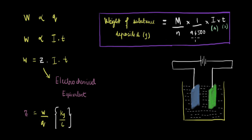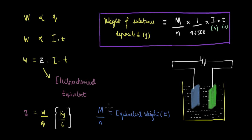If you want to know more about how we got to this expression, you can check out the other video which was exclusively on the first law. Now there is one more piece of information we need to understand the second law, and that is the definition of equivalent weight. This M divided by N is defined as equivalent weight — that is, the molar mass of the substance divided by the number of moles of electrons involved.